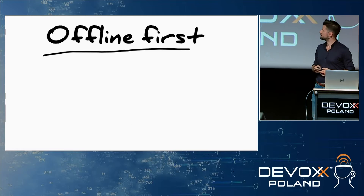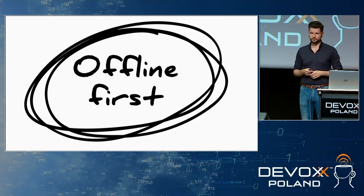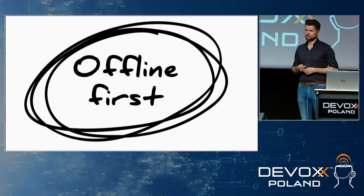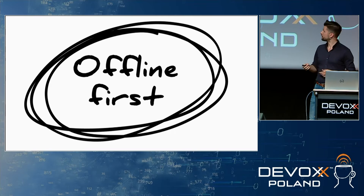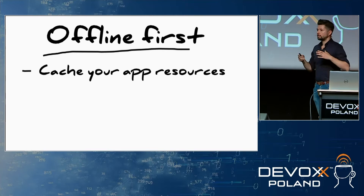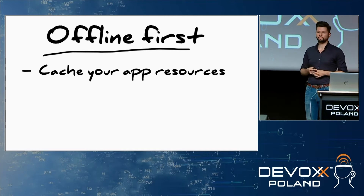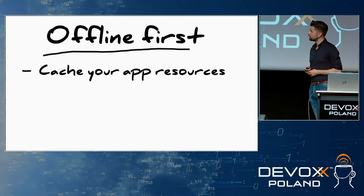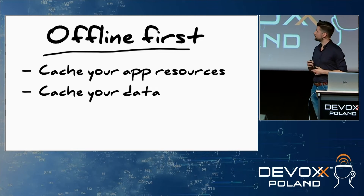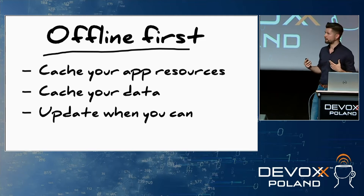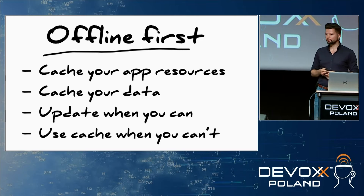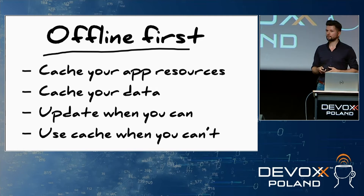Because of that, today I will speak about offline first — applications that in particular cases can operate without access to a remote application server. There are a few features that describe such applications. First, they need to load all application resources from the server and store them in local browser cache, do the same with data, and update those data and resources as often as possible when access to the server is available.